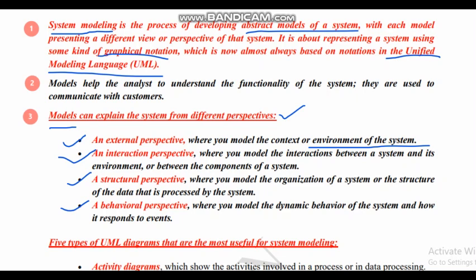Next we have interaction perspective. Interaction means using this model you will come to know who are interacting with your software, or we will also come to know the components which are interacting in the software. Interaction will show the relationship between the outer world and the software, or the environment and the system along with the components of the system — the interaction between the environment, system and its internal components.